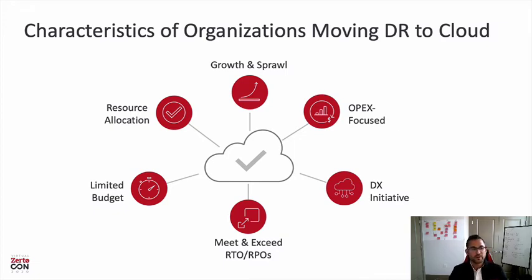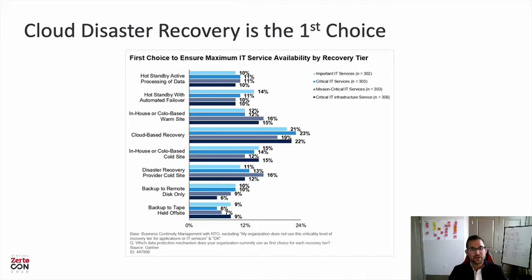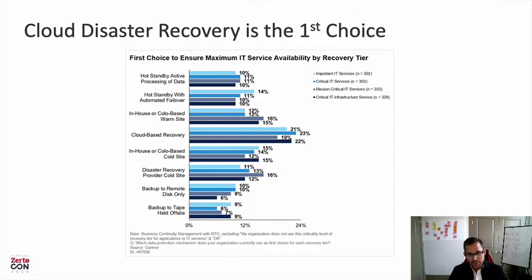There are very few organizations where it makes more sense to remain on-premises. Cloud disaster recovery is the first choice organizations are making, and it's the most important consideration. If your organization has those same characteristics, you really have to think hard about why you're doing it and then evaluate what your options are.